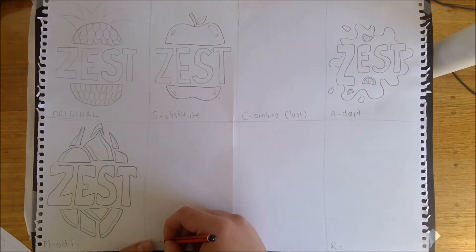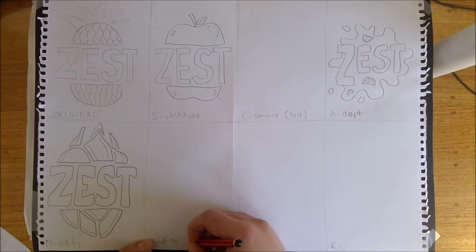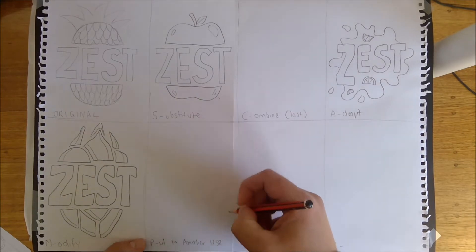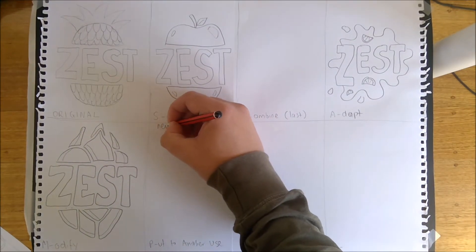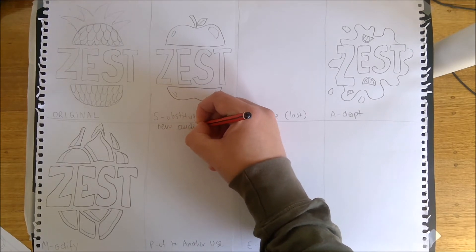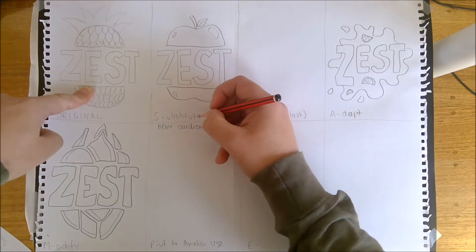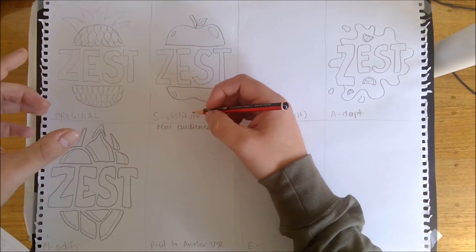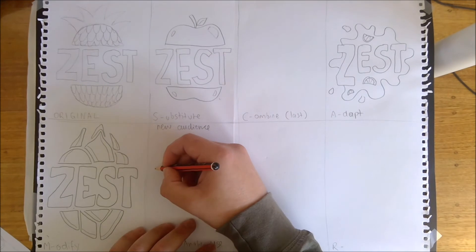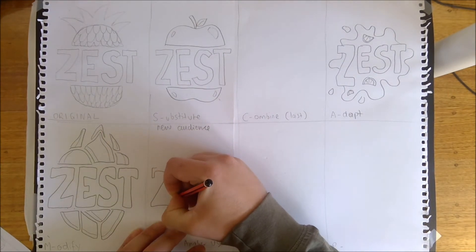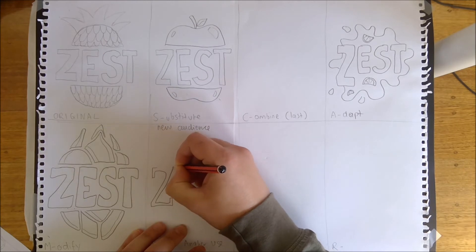P stands for put to another use, and what that means is we need to adapt for a new audience. So whilst this logo probably appeals to more of a younger age range, we're going to try and change it to be a little bit more elderly, a little bit more sophisticated. What I'm going to do is I'm going to take our typeface, make it a bit thinner, and I'm going to make it a serif typeface.